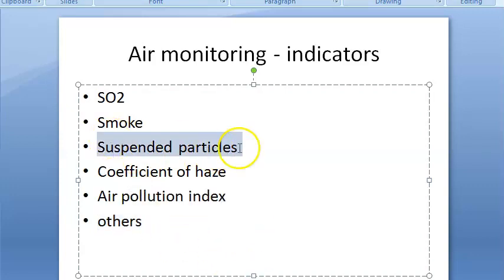If you're talking about suspended particles, there will be grit, dust, and other solids. Coefficient of haze will again be the amount of smoke - probably this is referring to visibility. Air pollution index is an arbitrary index. For smoke, a known volume of air is filtered through white filter paper and discoloration is measured. The main thing they're measuring as a particular gas is sulfur dioxide.